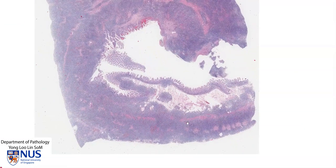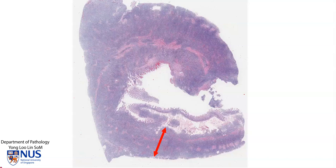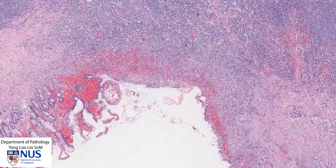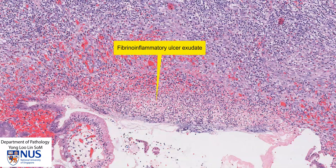We can see that there is a very abnormal infiltrate of bluish-appearing cells throughout the wall of the small bowel. In some areas it is full thickness; in other areas it just involves part of the wall. In this area, we can see that this has caused ulceration of the mucosa. There is a fibrinoinflammatory ulcer exudate here, and this means it can give rise to GI bleeding.